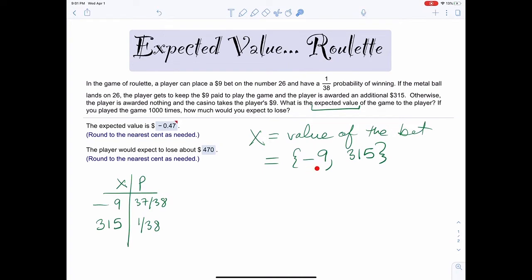So those are the two possibilities of this random variable. The random variable equals the value of the bet. The two outcomes are winning and losing. If you win, you get $315 and the probability of winning is 1 over 38. If you lose, you lose $9 and the probability is 37 over 38.